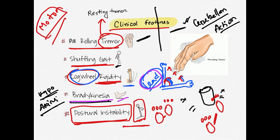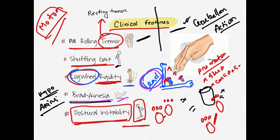There are also some pre-motor symptoms that can occur before the main motor symptoms appear. These pre-motor symptoms include sleep disorder, constipation, and depression. Sleep disorder, constipation, and depression are the key pre-motor symptoms of Parkinson's disease.